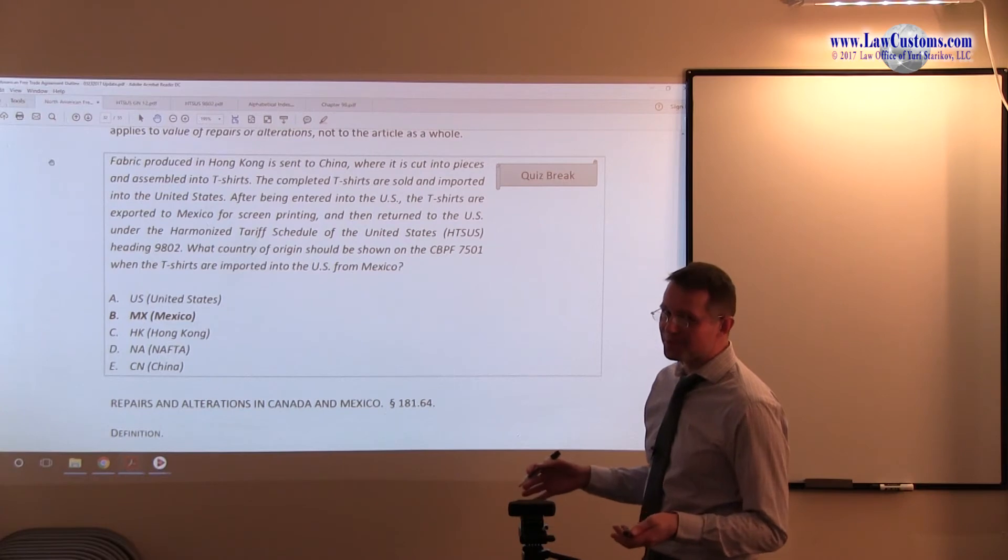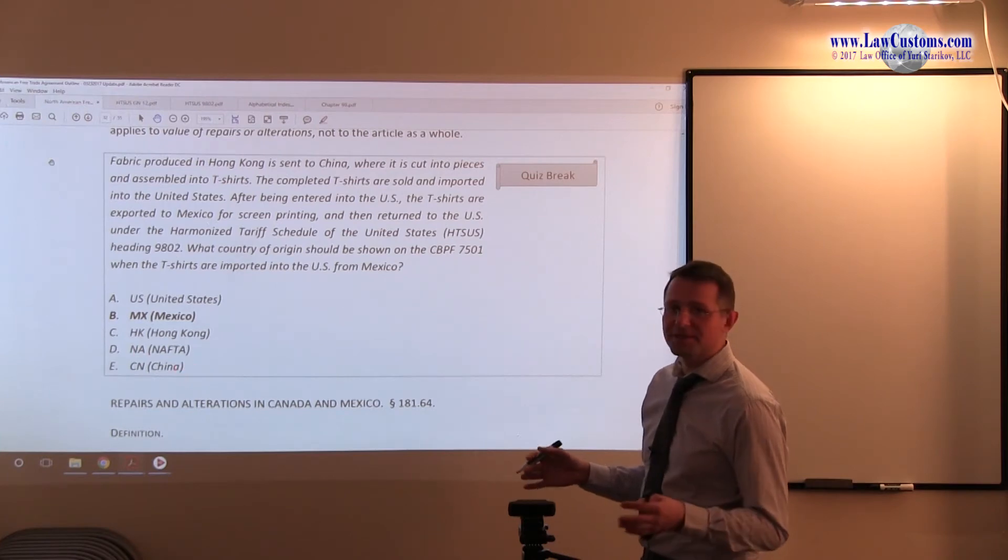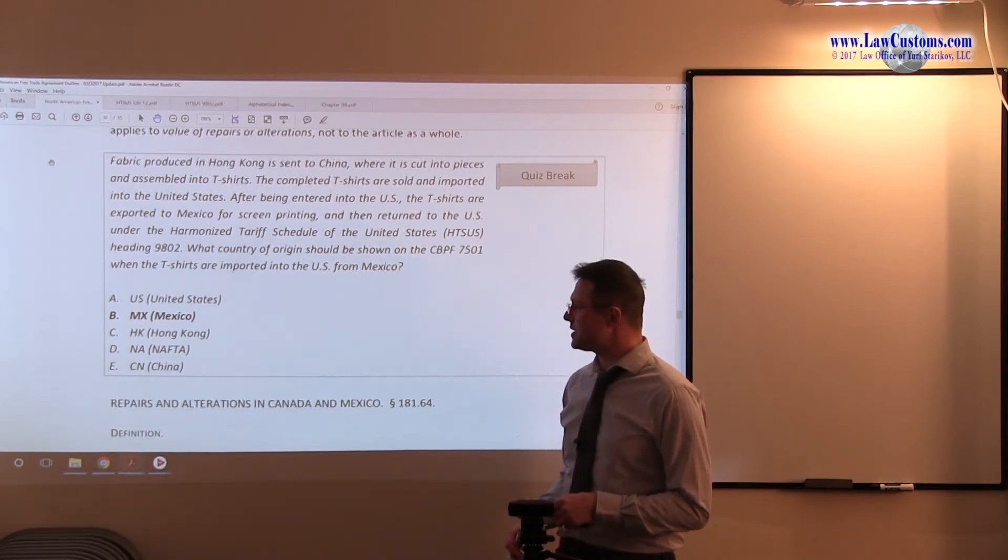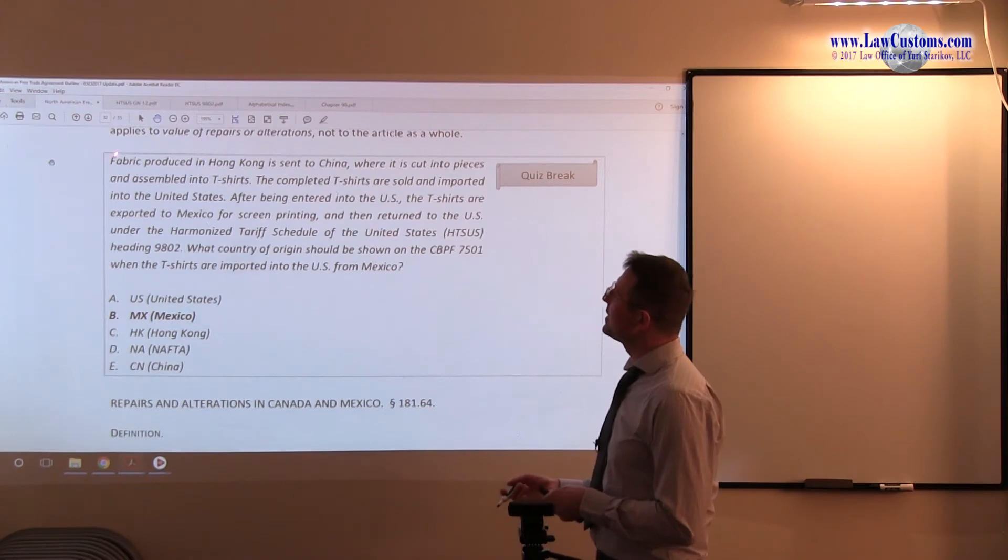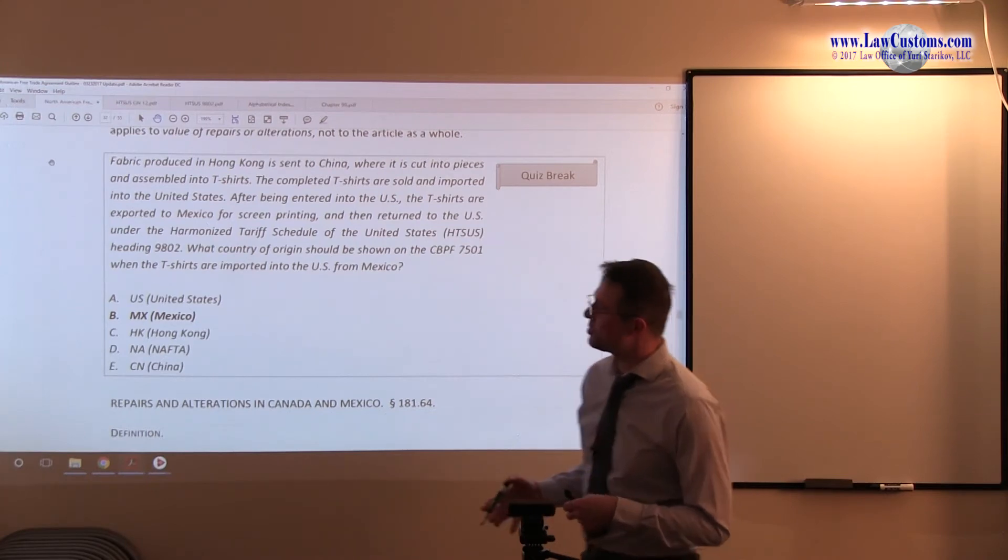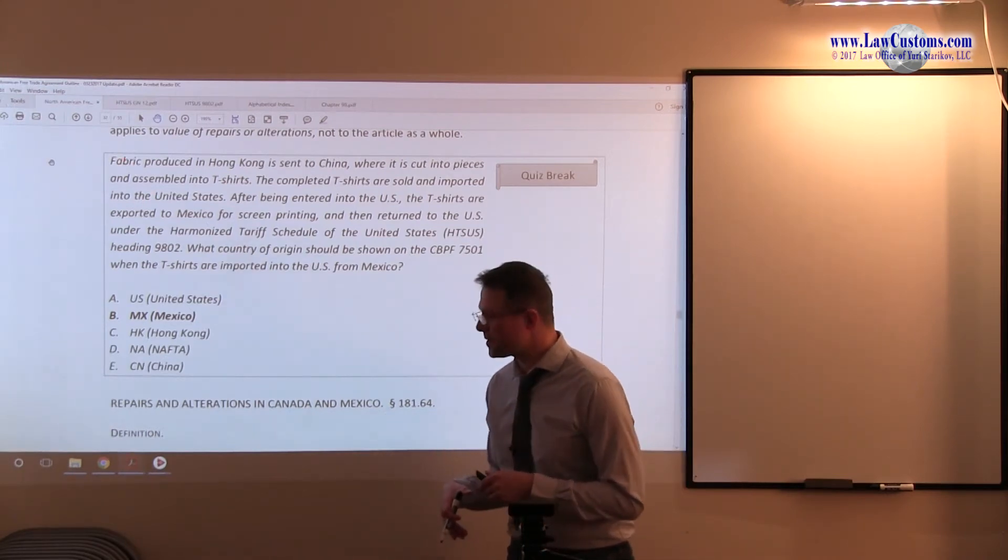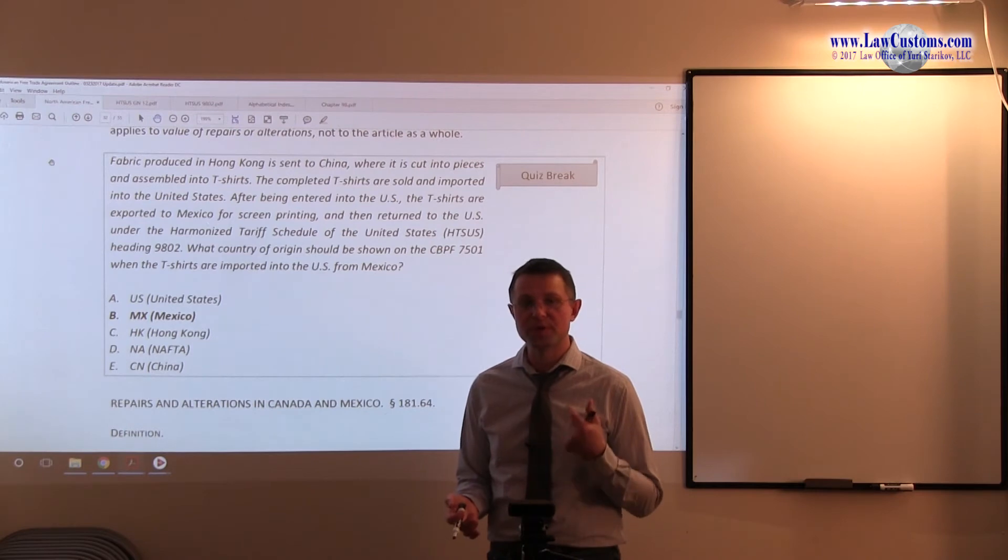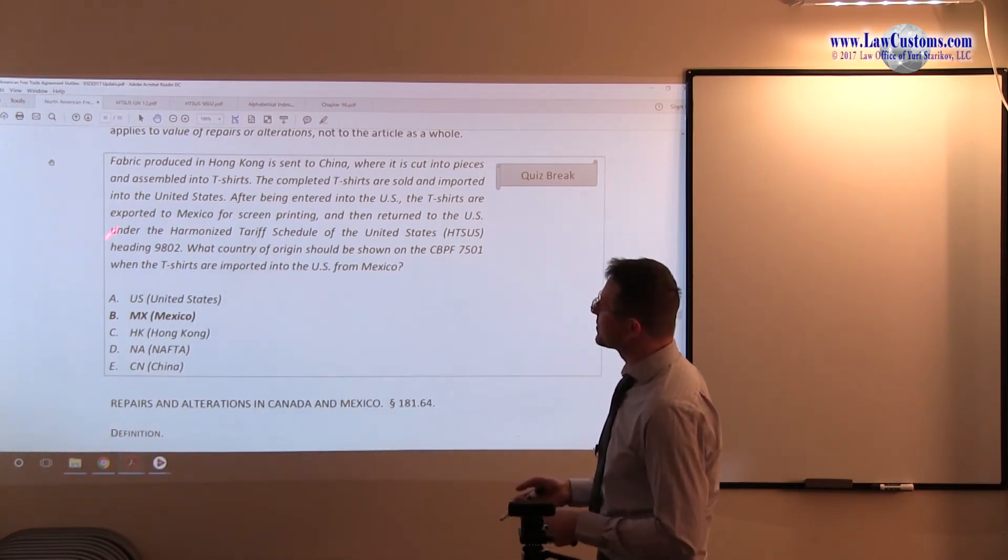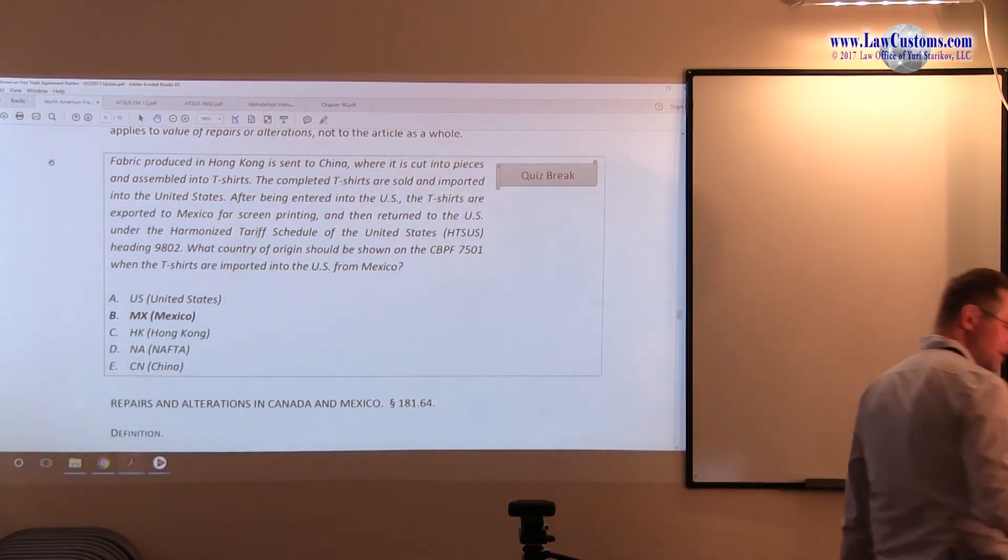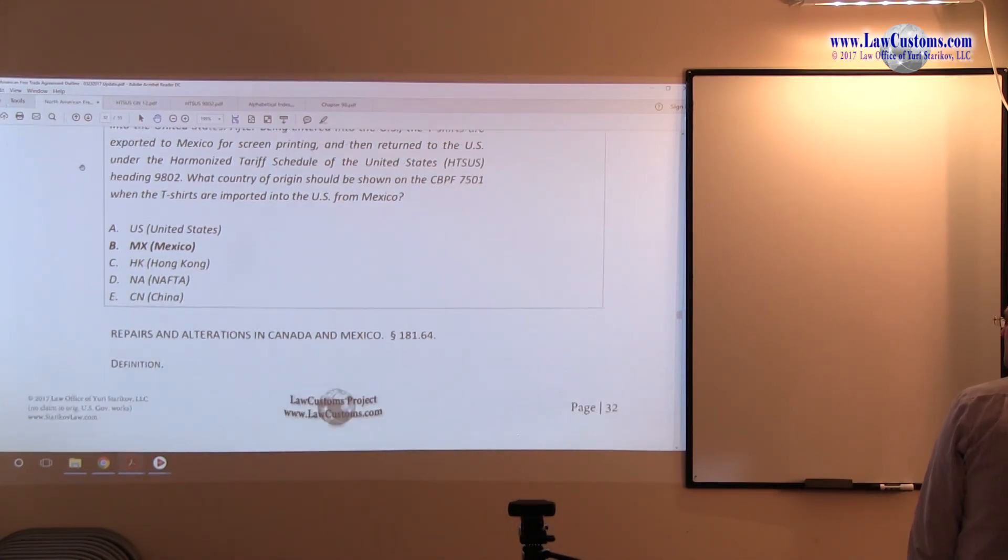NAFTA, there is no such symbol. It is either United States, Mexico or Canada, CA. NA doesn't exist. So this one is obviously incorrect. And China CN, well, most likely it would not be a correct answer choice even if you didn't apply chapter 9802 because it was only the fabric, not the T-shirt. But in here it's obviously wrong because we are only focused on the chapter 9802 question and here is the buzzword over here, 9802. So this is how examiners test on one of those issues on the 9802 issue in the customs broker exam.